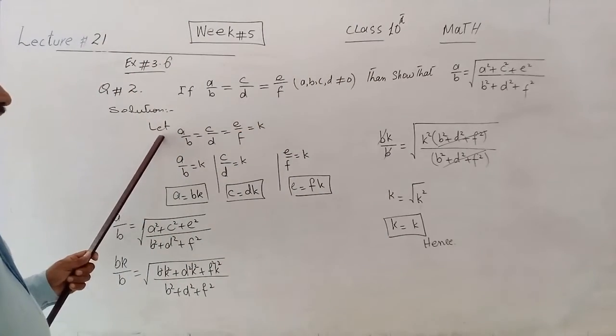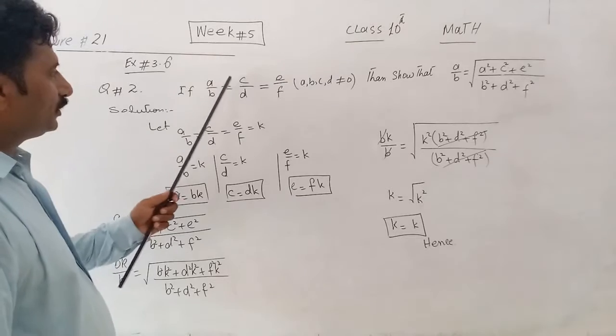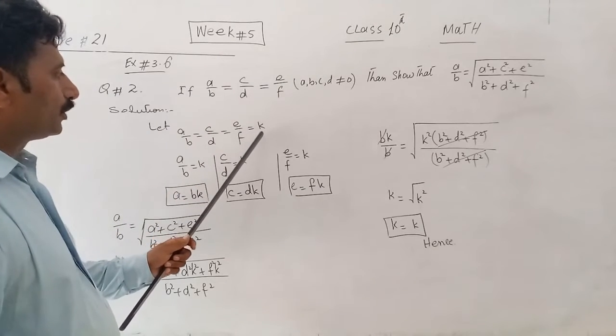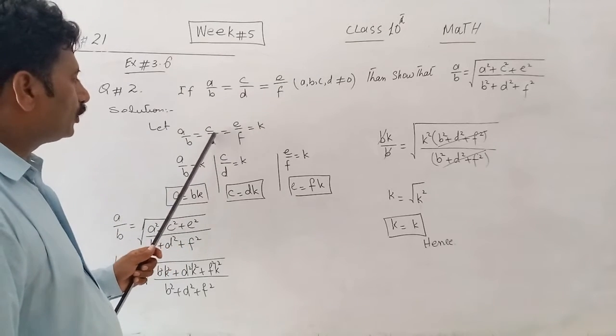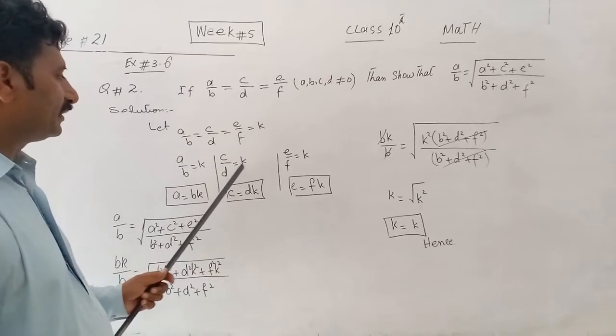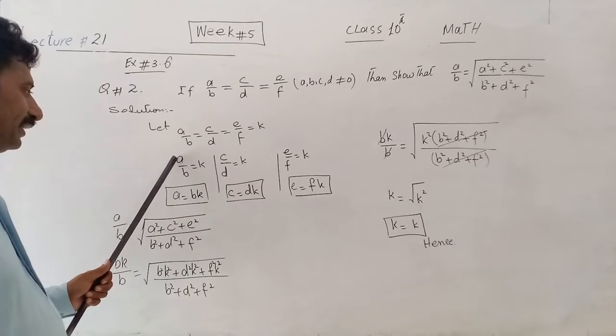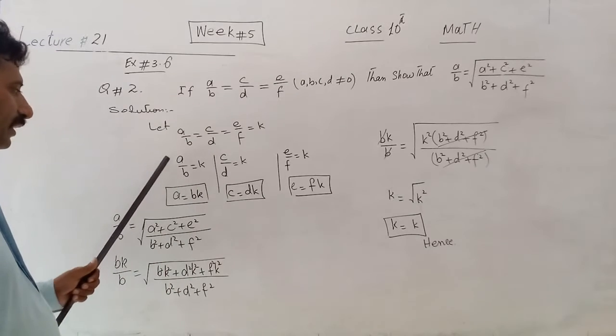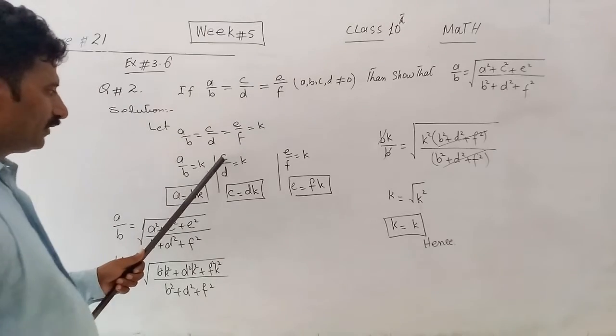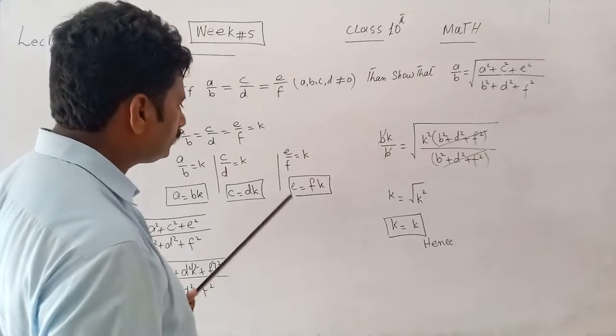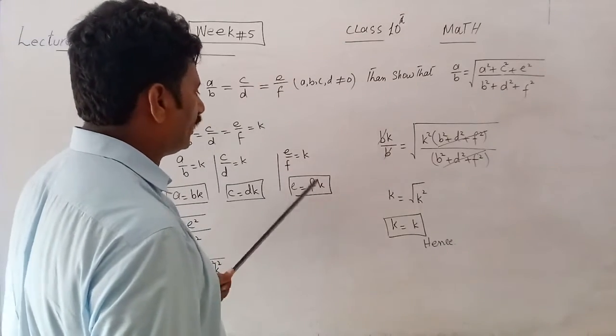We will consider that A/B is equal to C/D and E/F is equal to K. Then we have all terms equal to K, and we have written in this way, which we have nominated two values.